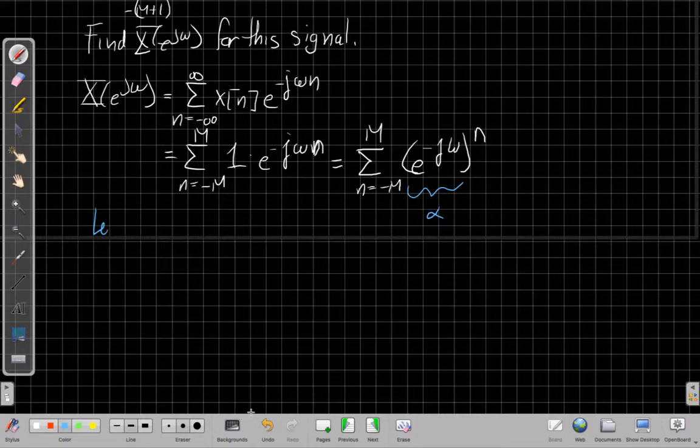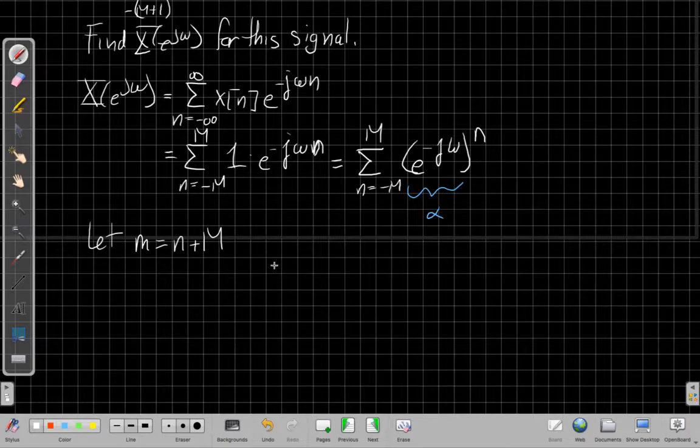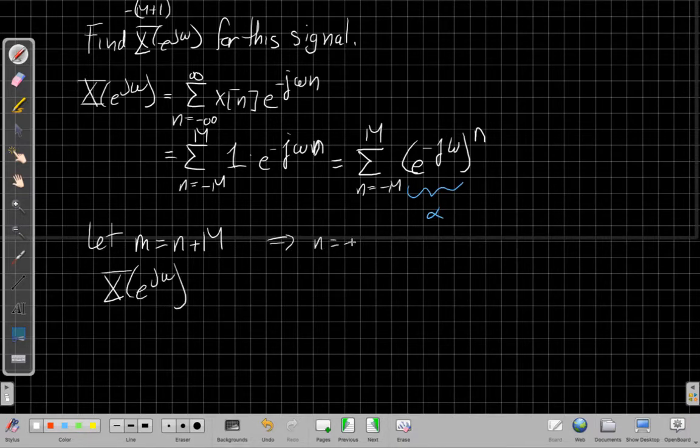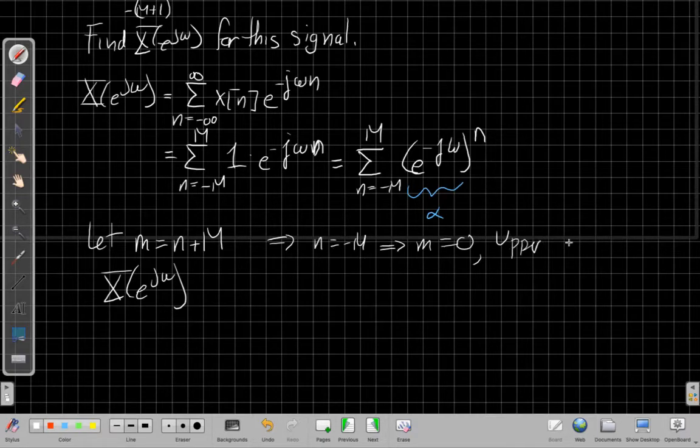What if I use a different term in the sum using a change of variables? I can get it into the form I need. So I can say, let's make a new variable for the sum. Let's let m equal to n plus capital M. And so if that's the case, then when I do that, I can use that change of variables in my sum. When n equals minus M becomes m equals 0, so the lower limit goes from m equals 0. The upper limit, when n equals M, if I plug that into this equation, I get that m is 2M.